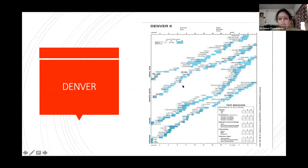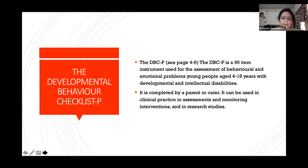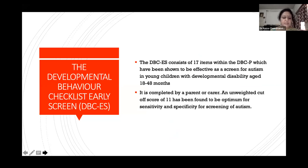The Denver tool, used regularly in developmental clinics, also has a test behavior section in the corner. If across three visits you find that the child shows fearfulness, non-compliance, or inability to maintain attention, then even this simple tool can raise suspicion of a behavioral disorder, which must then be confirmed by a psychologist. The simplest tools we can use are the Ages and Stages Questionnaire or the Denver to pick up behavioral problems early.